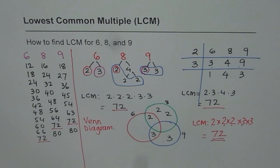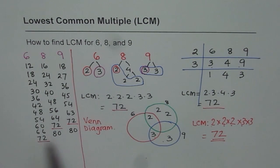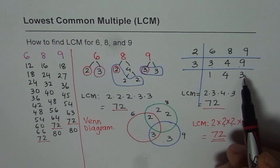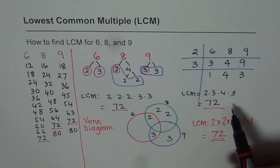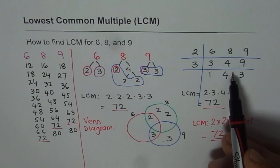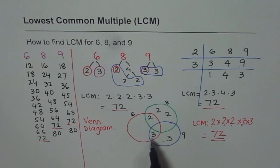So in this video, you have learnt 4 techniques to find the lowest common multiple. The first one is to list all the multiples and find the lowest common. The second one is prime factorization — find the prime factors and pick the ones with the maximum count of each type. Then we have repeated division — keep dividing by common factors for at least 2 terms. The last one is the Venn diagram, where you place the factors in the diagram and then find the least common multiple.